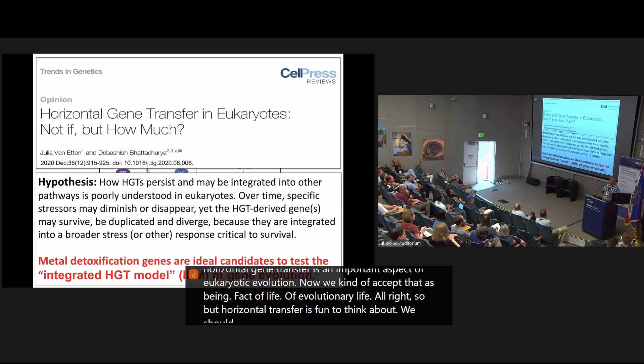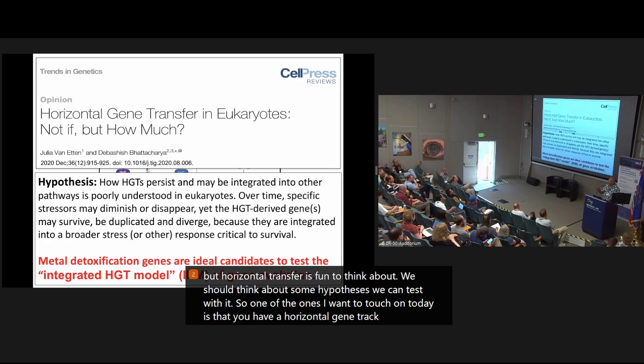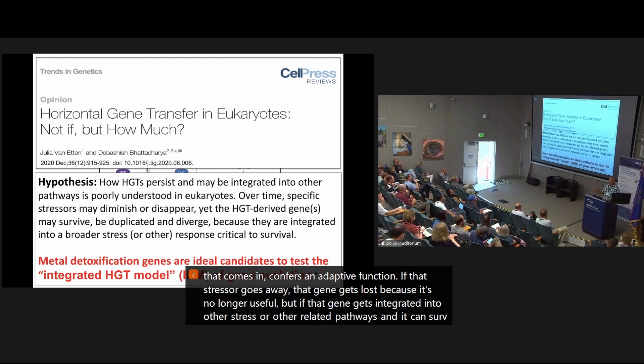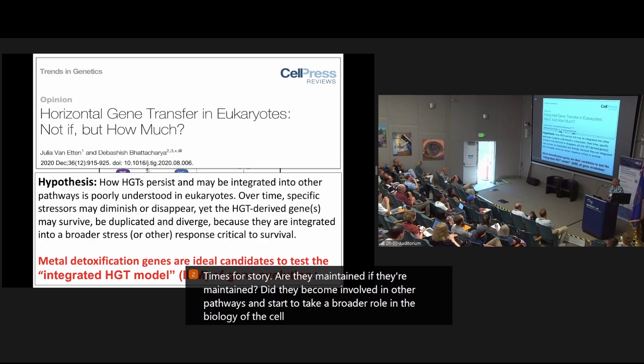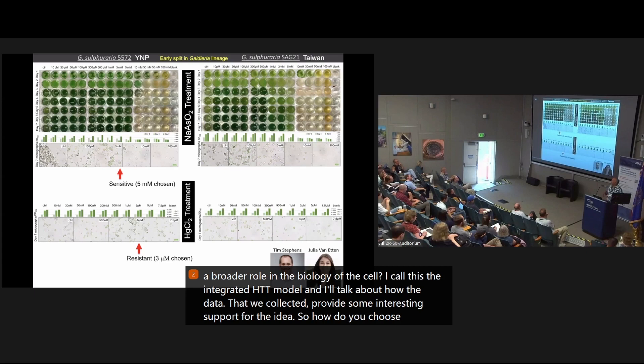All right. So the horizontal transfer is fun to think about, but we should think about some hypotheses we can test with it. So one of the ones I want to touch on today is that you have a horizontal gene transfer that comes in, confers an adaptive function. If that stressor goes away, that gene gets lost because it's no longer useful. But if that gene gets integrated to other stressor or other related pathways, then it can survive. So that's a key aspect of the horizontal gene transfer story. Are they maintained? If they're maintained, do they become involved in other pathways and start to take a broader role in the biology of the cell? I call this the integrated HGT model, and I'll talk about how the data that we've collected provides some interesting support for the idea.